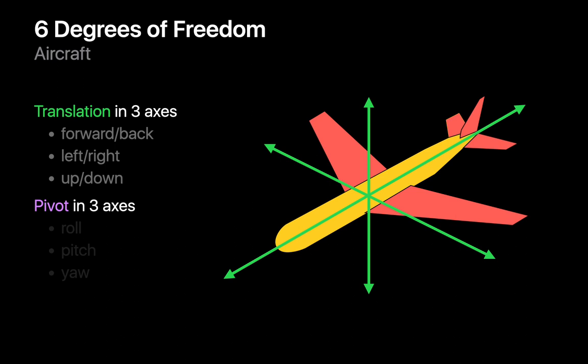Your aircraft can also pivot along three axes. You can roll and cause the wingtips to go up and down. You can pitch and cause the nose of the aircraft to go up and down. And you can yaw and make the nose of the plane point right or left.